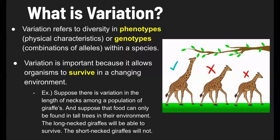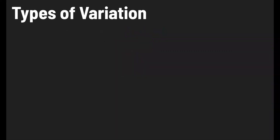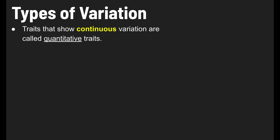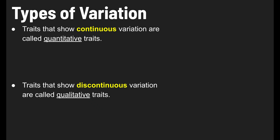This is a simple example to illustrate the point that variation will allow some organisms to survive and others not. There are different types of variation. Traits that show continuous variation are called quantitative traits, and traits that show discontinuous variation are called qualitative traits. So the two types of variation are continuous and discontinuous.